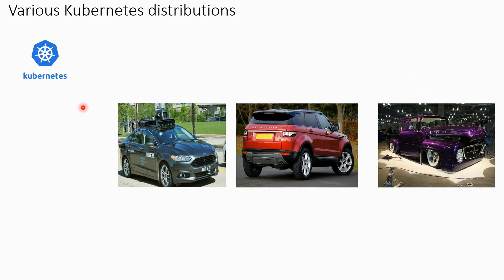In this picture I have shown three types of cars. The first one is an Uber — owned by someone else. The second is a private vehicle of your choice — a Chevrolet, Range Rover, Hyundai, Mercedes, Audi, anything. The third is a custom-built car, a DIY kind of stuff, a customized vehicle. We will understand Kubernetes distributions with this analogy.